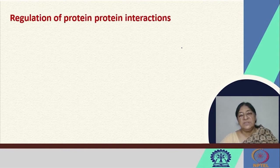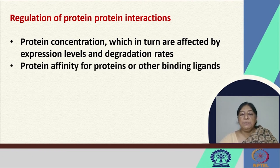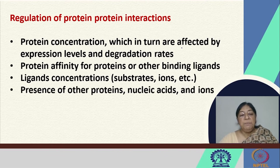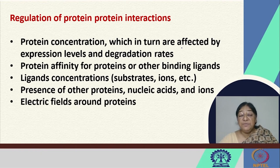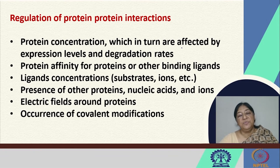Having looked at these different types of protein-protein interactions, we now consider the regulation of protein-protein interactions. This can be regulated by the protein concentration, which is affected by expression levels and degradation rates; the specific protein-protein affinity for other proteins or binding ligands; ligand concentrations; substrates or ions; whether small molecules affect the presence of other proteins, nucleic acids and ions; and electric fields around the proteins. There are also covalent modifications that may break or interrupt the protein-protein interaction site, affecting it in a manner that would prevent its specific biological function.